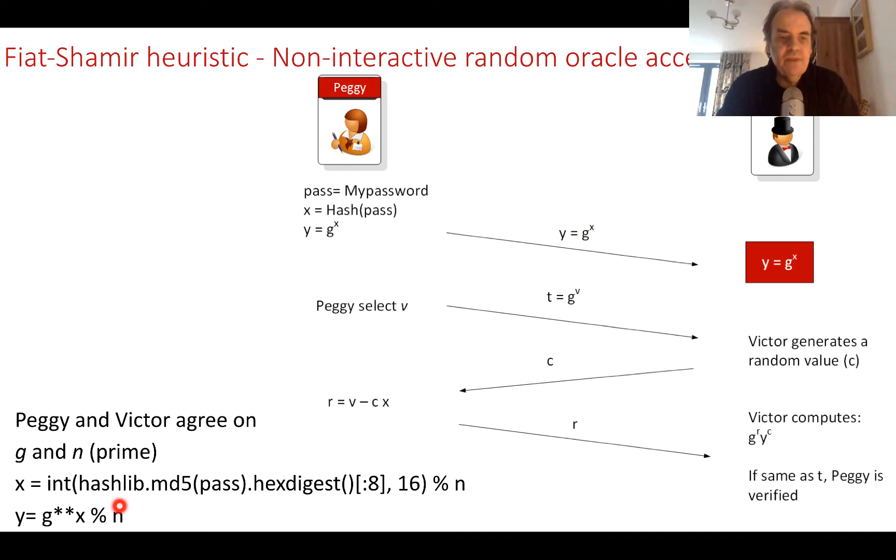She generates g to the power of x, which is the y value. She then passes that value to Victor, and that becomes the registration value for her password.